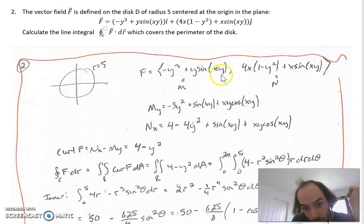When I calculate M_y, I do the partial derivative of this thing with respect to y. That gives me negative 3y squared, and then I got to do product rule here. The derivative of the first with respect to y is 1 times the second, plus the derivative of the sine piece, which gives me cosine, and then an x comes out front because of the chain rule.